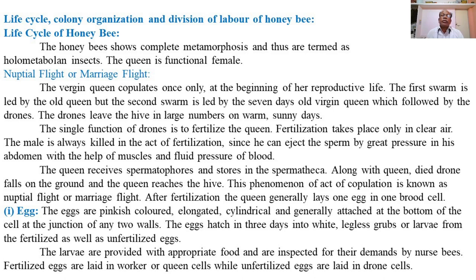The honeybees show complete metamorphosis and thus are called holometabolous insects. This means the life cycle includes all four stages: egg, larva, pupa, and adult. Holo means complete and metabolous means different stages of the life cycle.